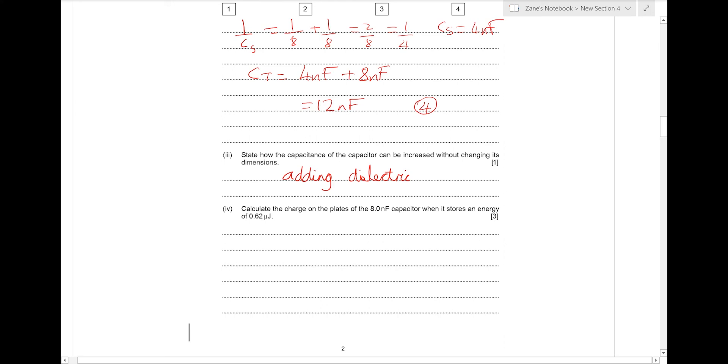Next, we're asked to calculate the charge on the plates of the 8 nF capacitor when it stores an energy of 0.62 microjoules. Well, here we can use this version of the energy stored formula in the capacitor. Remember that's not given to you in the data book. You have to rearrange or combine together U equals a half QV and Q equals CV to be able to get this relationship.